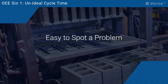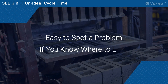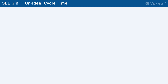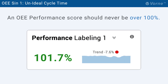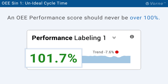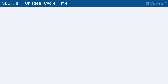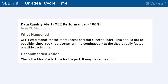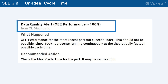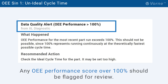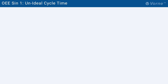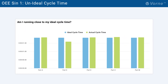There are easy ways to spot a problem with ICT if you know where to look. First, an OEE performance score should never be greater than 100%. If it is, the most likely culprit is ICTs that are set too slow. Fortunately, this is an easy problem to detect. If you have automated production monitoring, a data quality alert should be automatically triggered any time OEE performance is over 100%. Second, if every cycle time is measured, you can compare actual cycle time to ideal cycle time for each part and instantly spot anomalies.